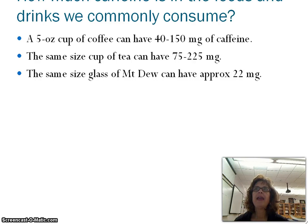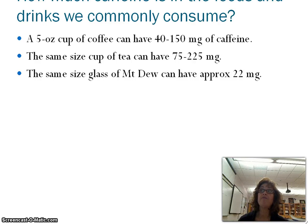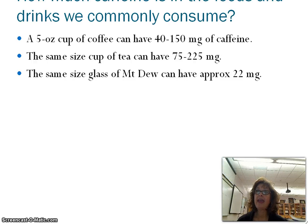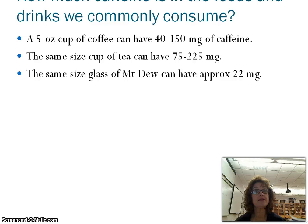If you have a five-ounce cup of coffee, you can have anywhere from 40 to 150 milligrams of caffeine. The same size cup of tea can have 75 to 225 milligrams. And the same size glass of Mountain Dew can have approximately 22 milligrams.